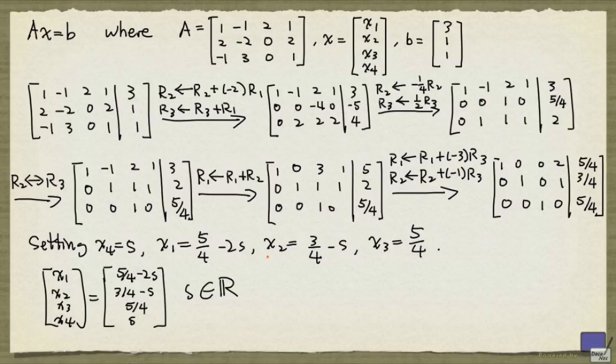One final remark: no matter how you transform a matrix into a matrix in reduced row echelon form using elementary row operations, you'll always get the same matrix. As a result, we can refer to the reduced row echelon form of a matrix, and that's the language that we'll often employ from now on.